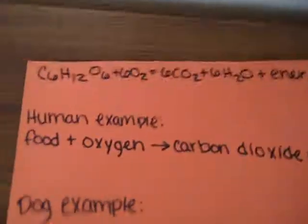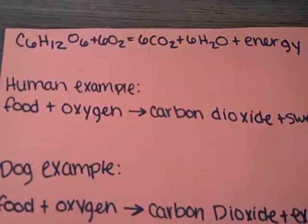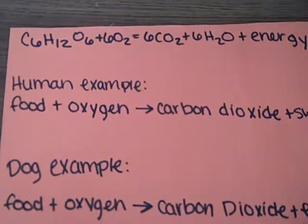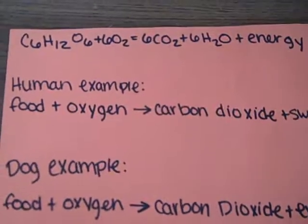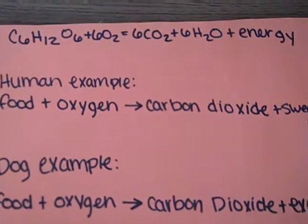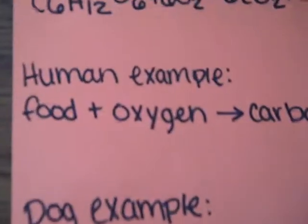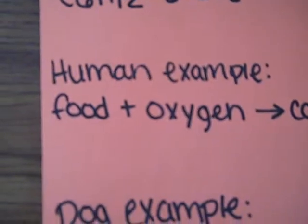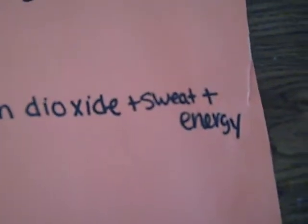The formula for cellular respiration is C6H12O6 plus 6O2 equals 6CO2 plus 6H2O plus energy. Essentially, what goes in needs to come out. For the human example, the food and the oxygen will be what is intaken and as a result, to come out: carbon dioxide, sweat, and energy.